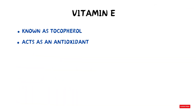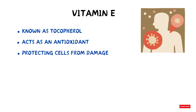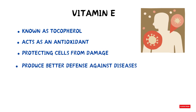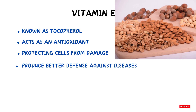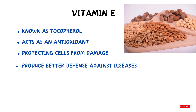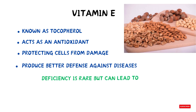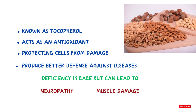Vitamin E, also known as tocopherol, acts as an antioxidant, protecting cells from damage. It also helps the body produce a better defense against diseases. It is found in nuts and seeds, vegetable oils, and fortified cereals. Deficiency is rare but can lead to neuropathy and muscle damage.